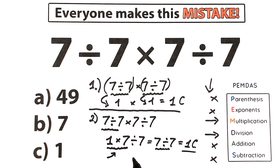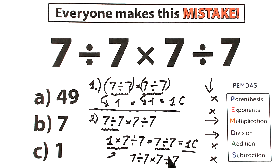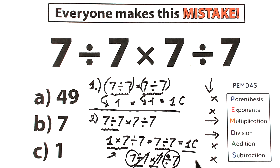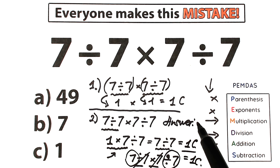I want to show you a great algebra trick. We have 7 divided by 7 times 7 divided by 7. Look at the middle: we have division by 7 followed by multiplication by 7 — this is like plus 7 minus 7, they cancel to give 1. So we're left with 7 in the beginning and 7 divided by 7 at the end, which also gives 1. Our correct answer is 1 — option C.